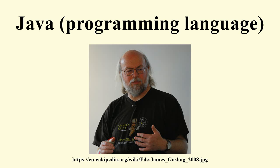James Gosling, Mike Sheridan, and Patrick Norton initiated the Java language project in June 1991. Java was originally designed for interactive television, but it was too advanced for the digital cable television industry at the time. The language was initially called Oak after an oak tree that stood outside Gosling's office. Later the project went by the name Green and was finally renamed Java, from Java Coffee.